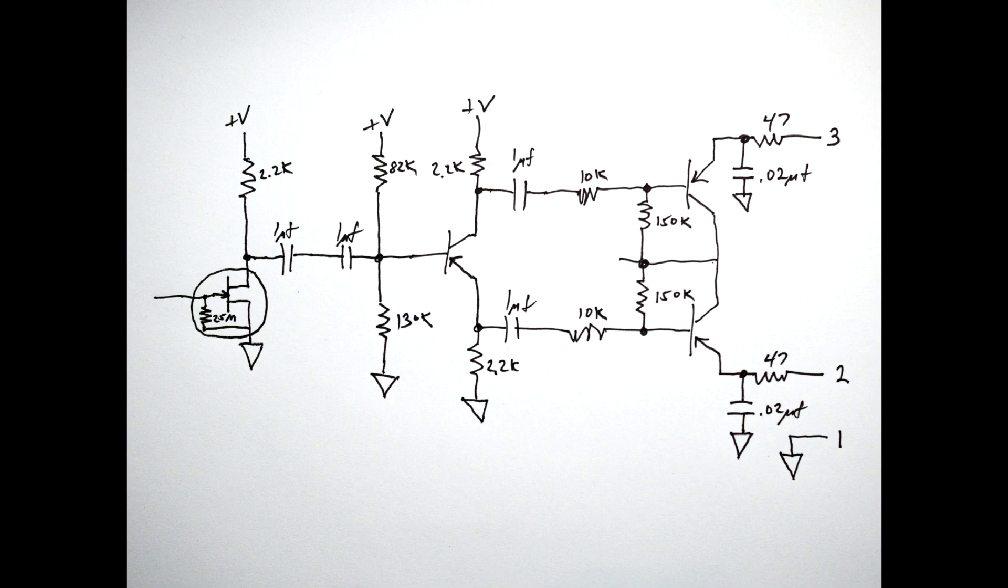The next stage is a PNP transistor. It's DC-biased with two resistors. And the collector and emitter are tied to plus V and ground through 2.2K resistors each. So it's very symmetric. And the output is taken off of the collector and the emitter as basically, it's a one transistor push-pull. As one signal goes up, the other signal goes down. So you have a differential signal coming out of this.